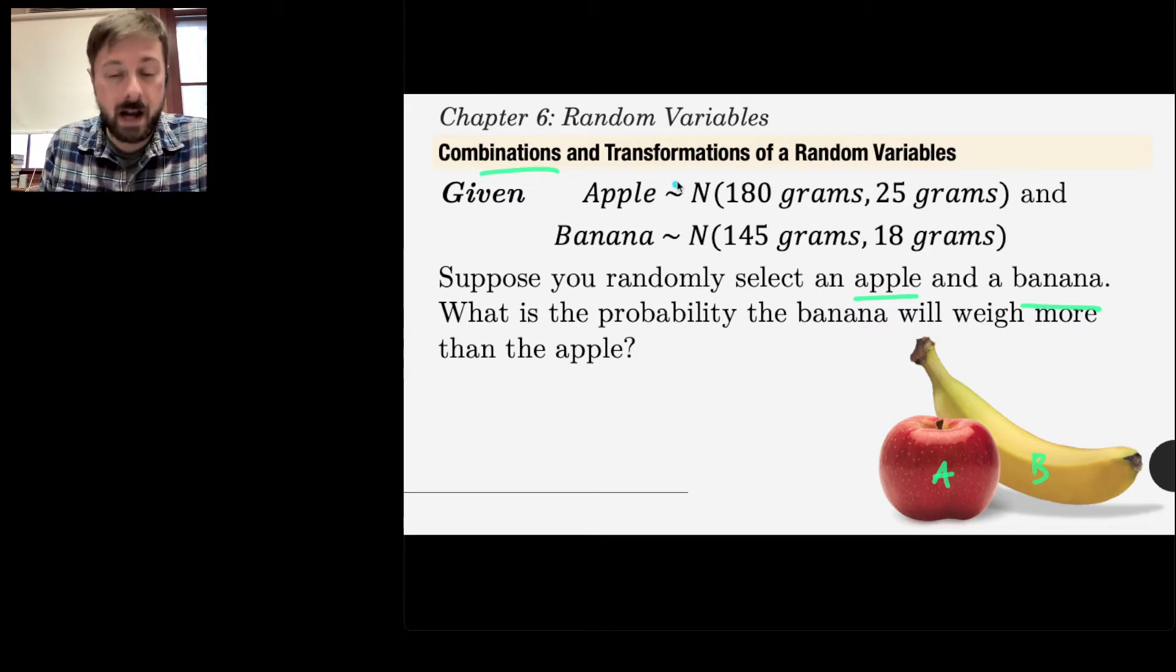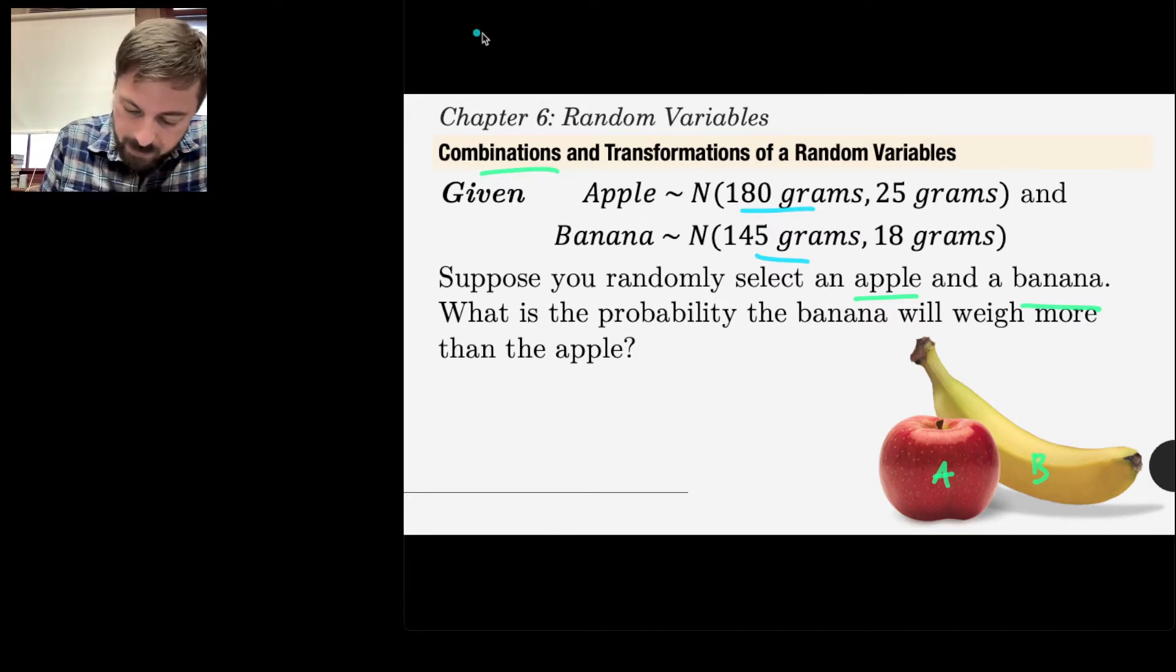Here we've got some facts about apples and bananas. We're told, let's just believe this is true, that apples have weights that are normally distributed with a mean of 180 grams and a standard deviation of 25, and bananas have a weight of 145 grams on average with a standard deviation of 18 grams.